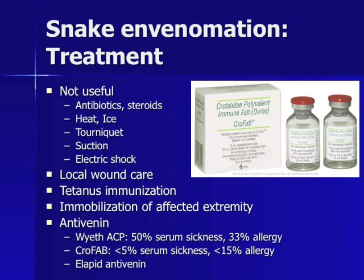The treatment of snake envenomation is more noteworthy for what not to do than what to do. Strategies tried unsuccessfully in the past include antibiotics, steroids, heat, ice, tourniquet application, suction, and electric shock therapy. What is indicated includes local wound care, tetanus immunization, immobilization of the affected extremity, and antivenin. A local toxicologist should be consulted in all cases of snake envenomation.